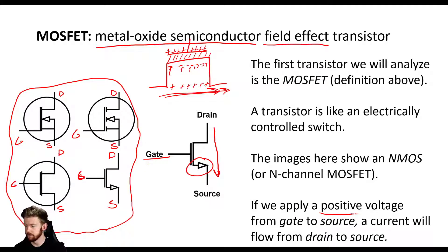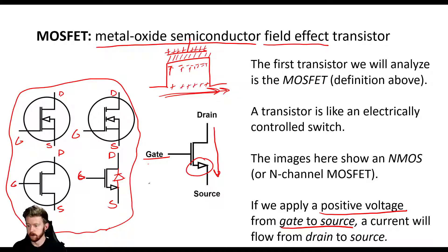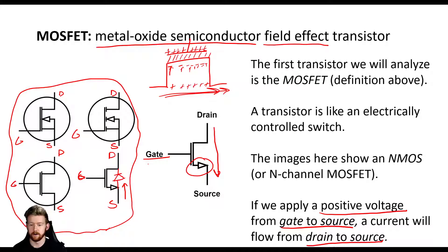The key is that we have to apply a positive voltage from gate to source, meaning the gate voltage must be higher than the source voltage for current to start flowing. If the source is at two volts and we only have one volt on the gate, that's not a positive gate-to-source voltage, so no current flows. Also, in the construction of a MOSFET there is a body diode from source to drain, so current must flow from drain to source — not the reverse.